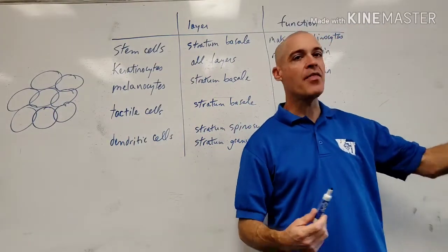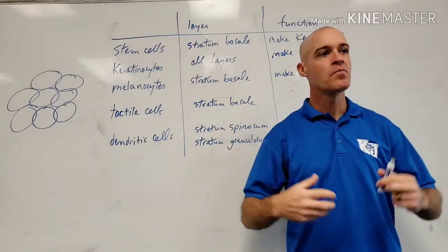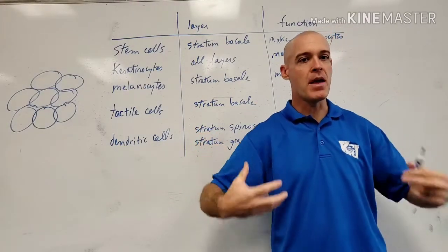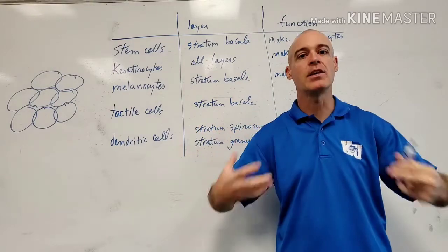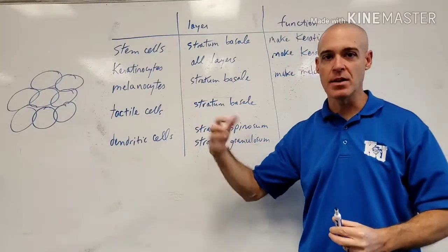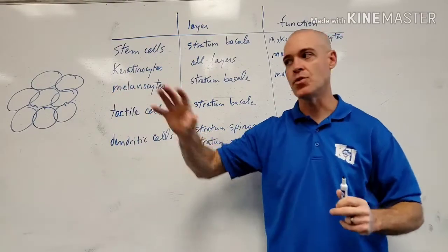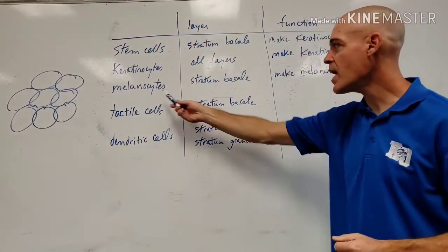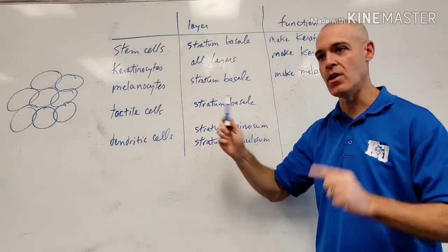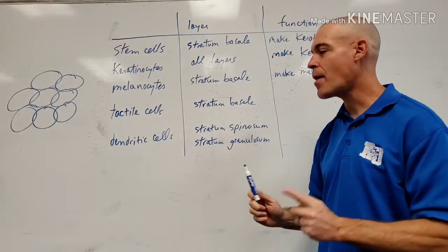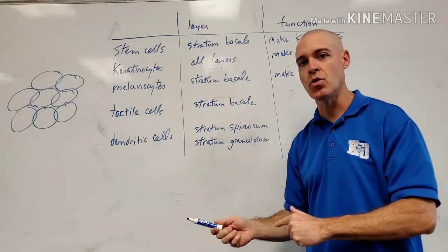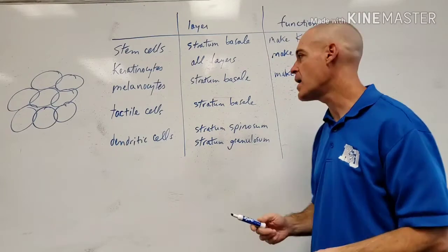When you go in the sun, that triggers melanin production. Darker-skinned people are going to make more of it and it's going to stick around more in their skin. Lighter-skinned people are still going to make it, they're just going to make a lot less and it's going to fade very quickly. Everybody makes melanin. The only people that are not going to properly make melanin are the ones with a genetic disorder called albinism.